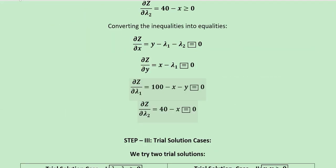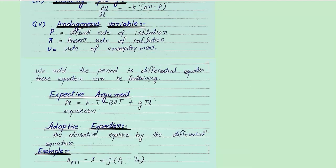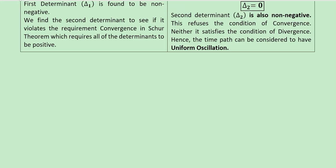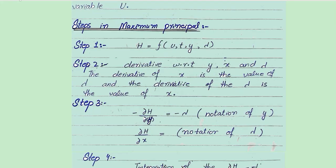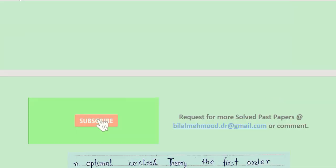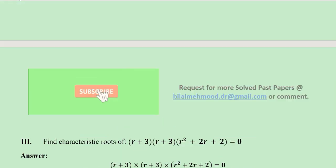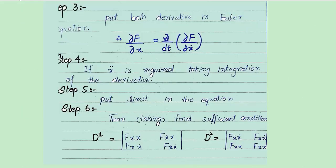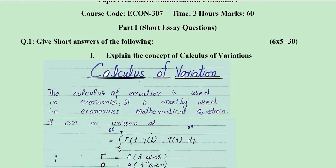These are the additional steps, whereas these were the conditions that were required. Before that we had the question in which we had to explain the Phillips curve with the help of difference and differential equations. And before that we had the application of the Schur Theorem on a second-order difference equation to find its dynamic stability. This was the set of short questions — a few were theoretical in nature and a few were in numerical form, as you can see these two or three numerical questions that we have already solved and explained.